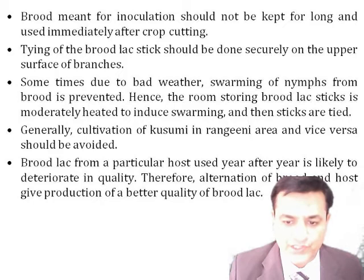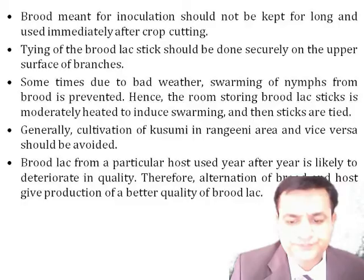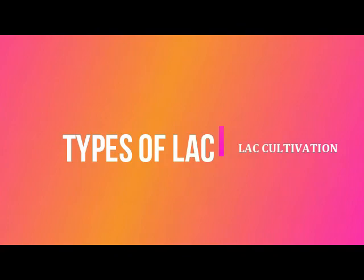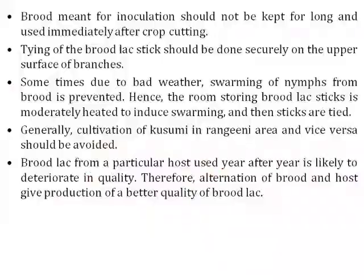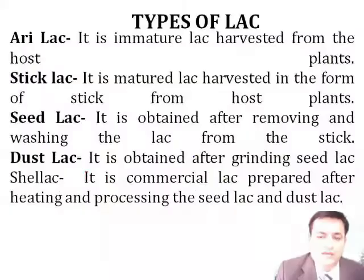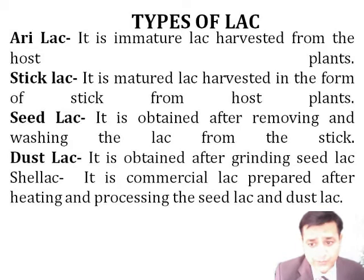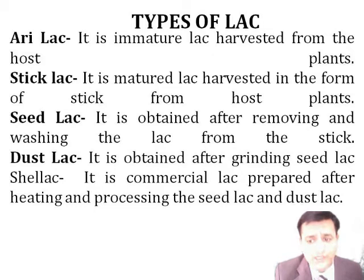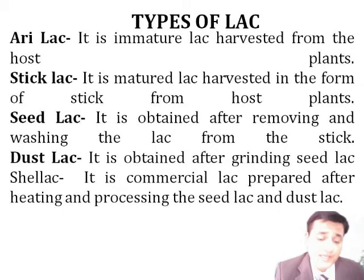Generally, cultivation of Kusumi in Rangini area and vice versa should be avoided. Different types of lac are: airy lac — immature lac harvested from host plants; stick lac — mature lac harvested in the form of sticks from host plants; seed lac — obtained after removing and washing the lac from the stick; dust lac — obtained after grinding seed lac; and shellac — the commercial lac prepared after heating and processing seed lac and dust lac.